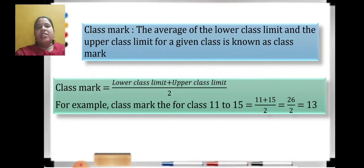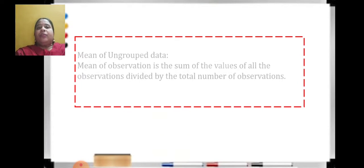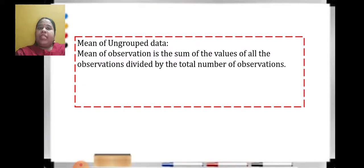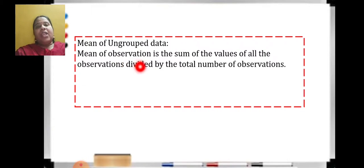So those were a few very important basic definitions: class range, class width, and class mark. Now, mean of ungrouped data. We are going to learn about the first central tendency, that is mean. When the data is ungrouped — suppose I give you marks of 10 students out of 20, like 10, 11, 15, 20, 25 — these are ungrouped. Mean is nothing but average: sum of all observations divided by the number of observations.